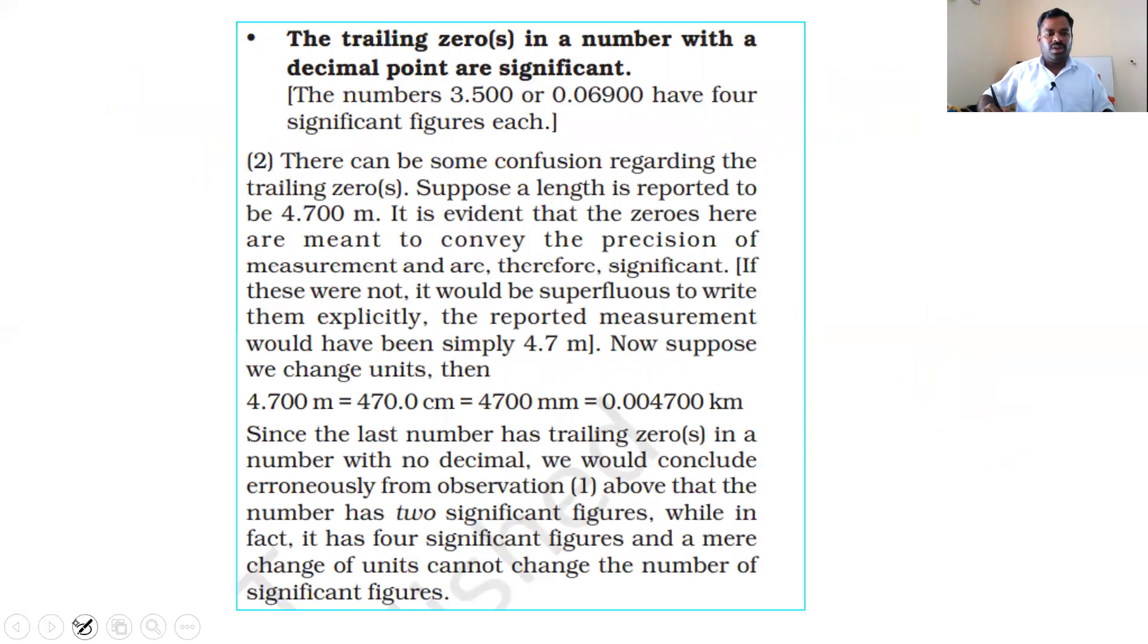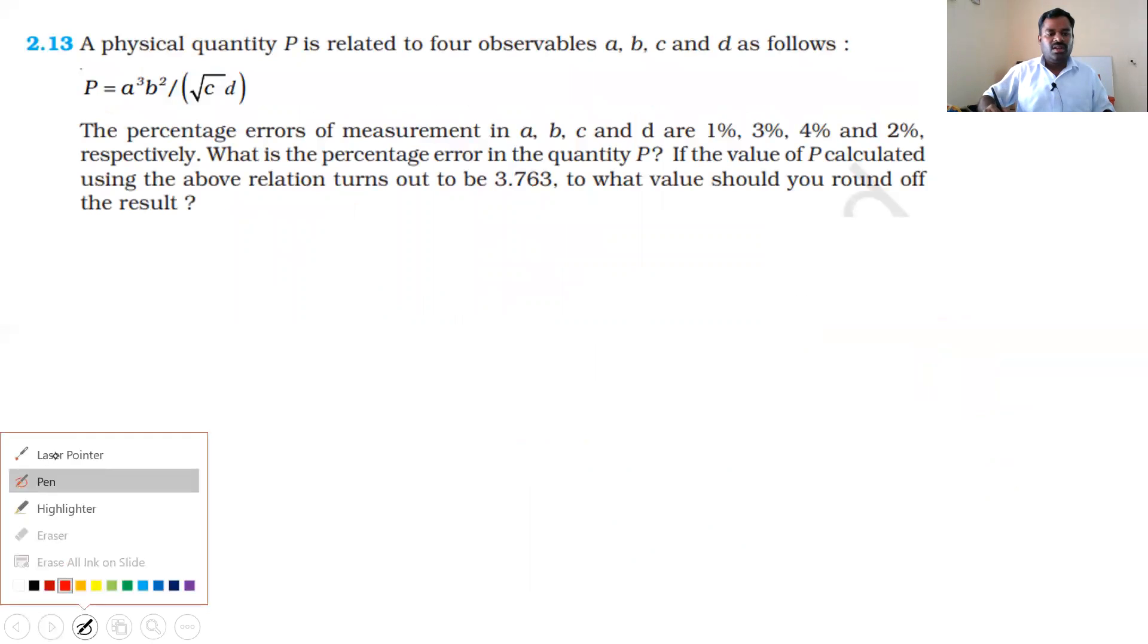Exercise 2.13: A physical quantity P is related to four observables a, b, c, and d as follows: P equals a cubed b squared divided by square root of c times d. The percentage errors of measurement in a, b, c, and d are 1%, 3%, 4%, and 2% respectively. What is the percentage error in the quantity P? If the value of P calculated using the above relation turns out to be 3.763, to what value should you round off the result?